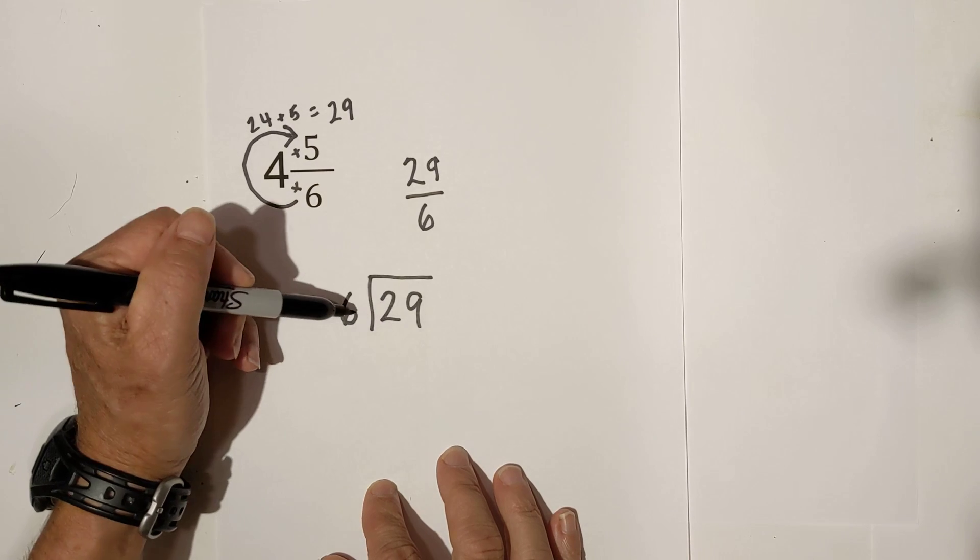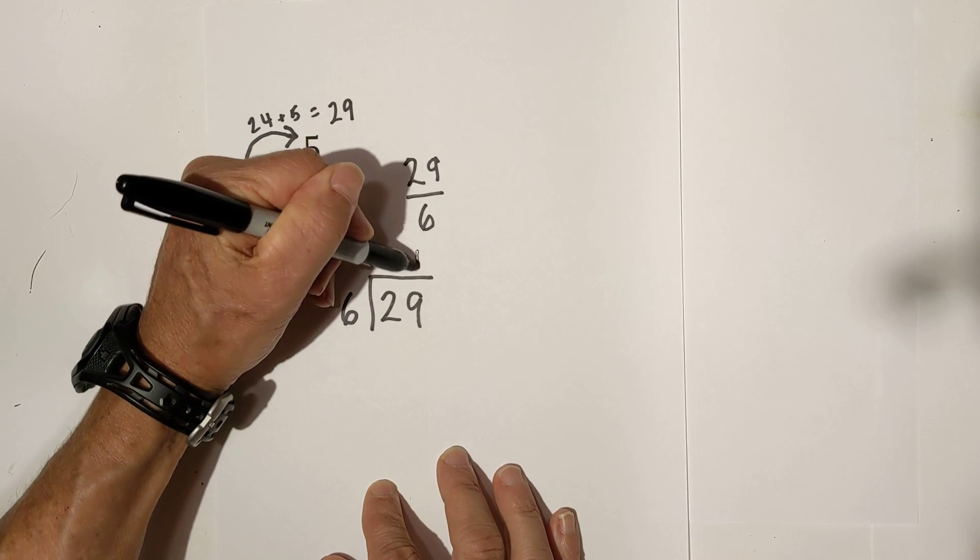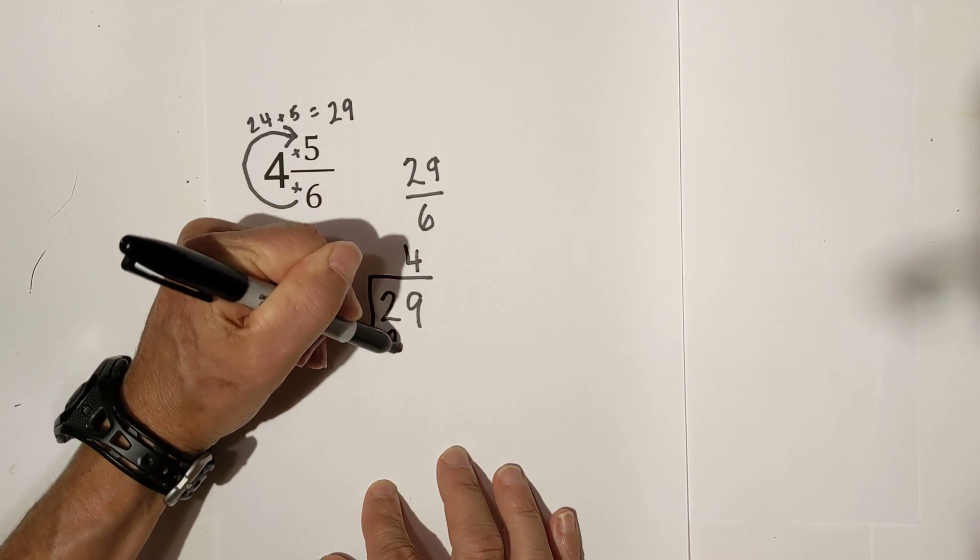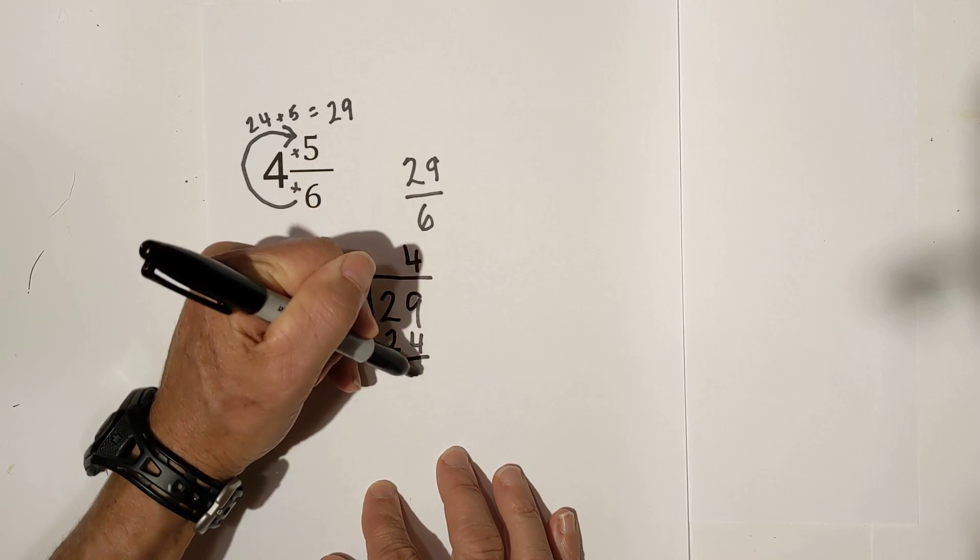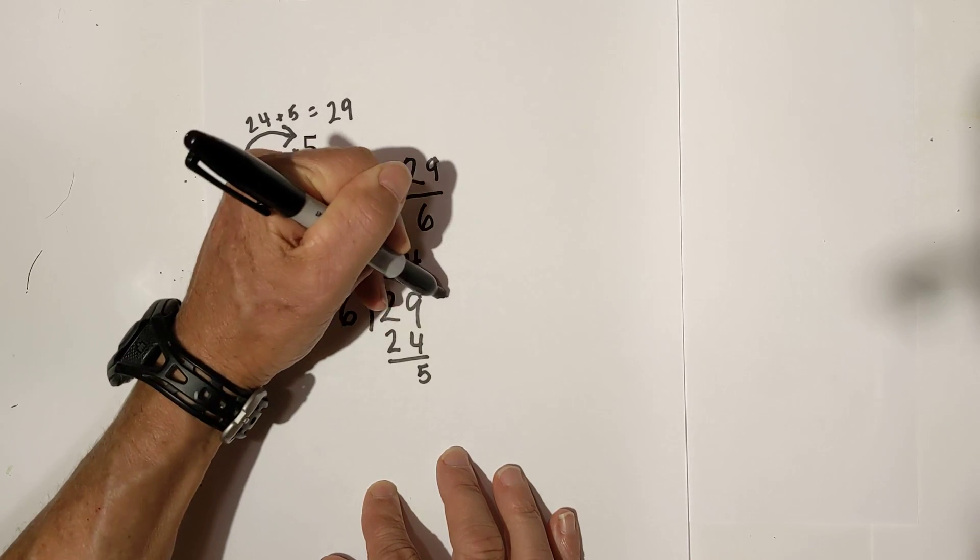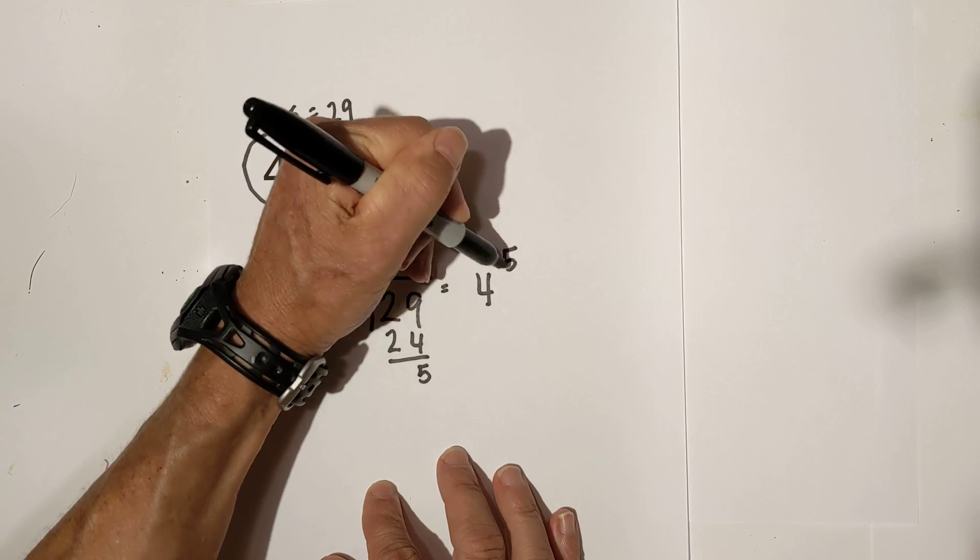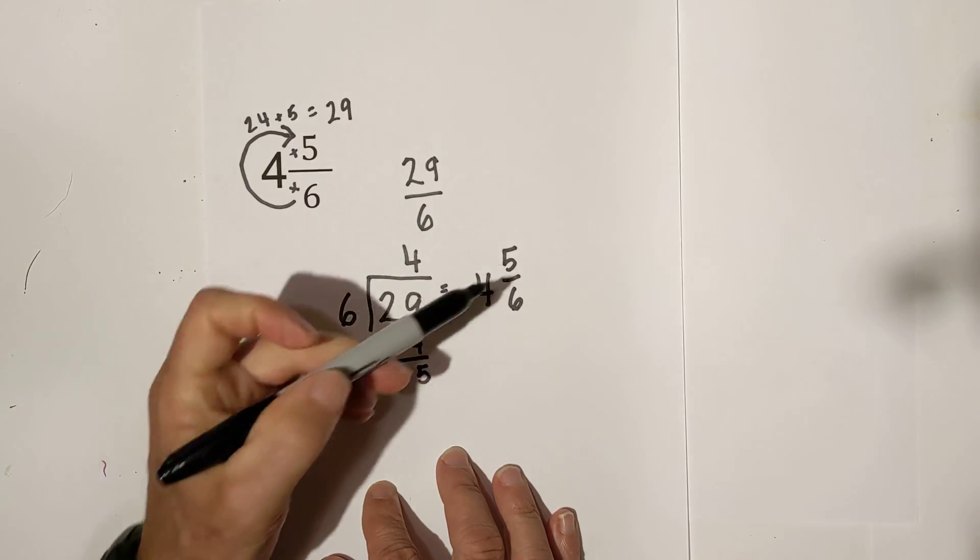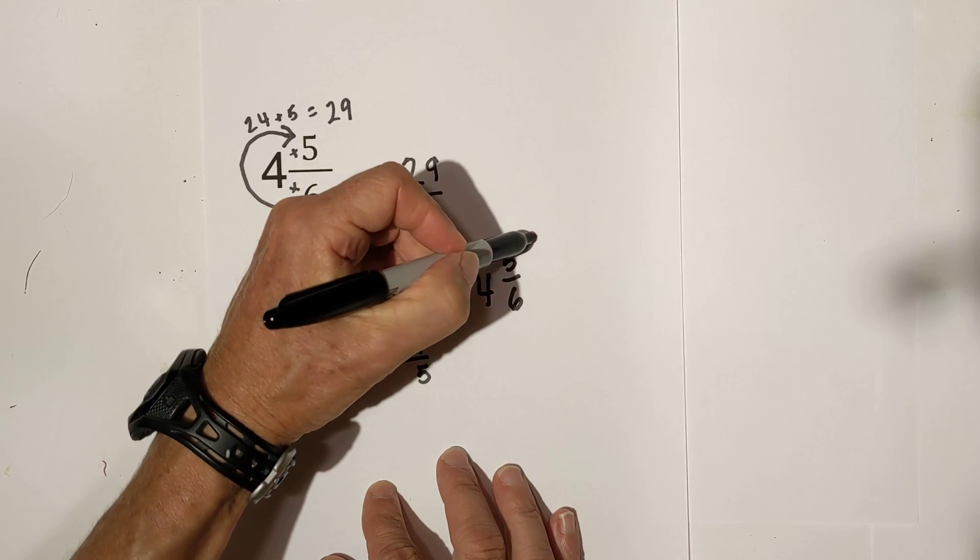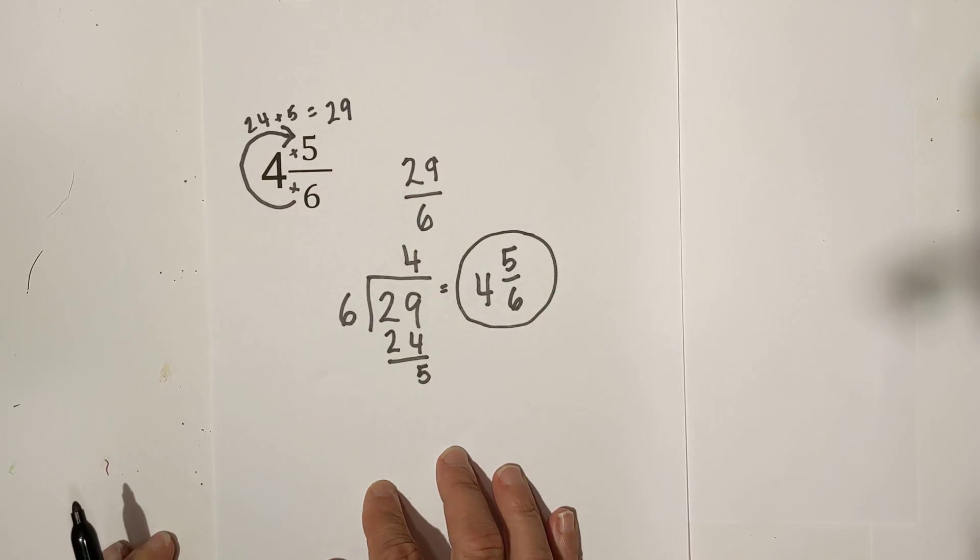So 6 goes into 29 four times that becomes 24. 29 minus 24 is 5. So we have 4 and 5 sixths. 5 is a prime number so it is simplified.